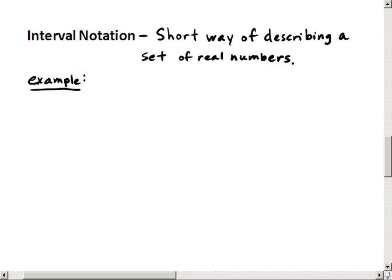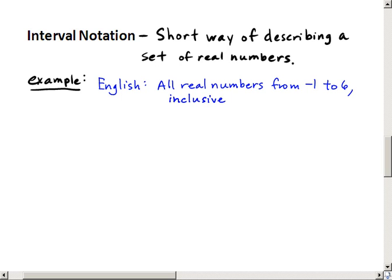For example, the English phrase all real numbers from negative 1 to 6 inclusive translates to a closed bracket, negative 1, comma, 6, and then another closed bracket.